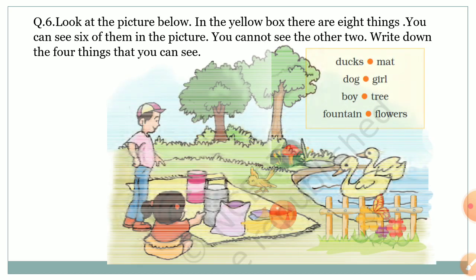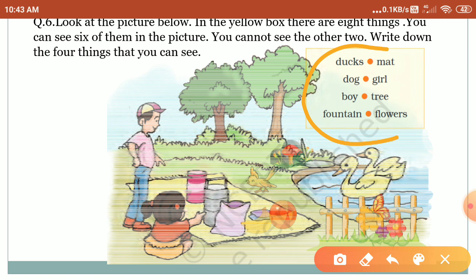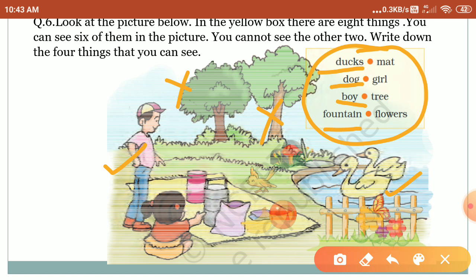Here is the picture and the yellow box. Can you see ducks in this picture? Yes. Can you see a dog in this picture? No. Can you see a boy in this picture? Yes. Can you see a fountain in the picture? No — fountain means 'fawara.' Next is mat. Can you see a mat in the picture? Yes, this is the mat. Can you see a girl in this picture? Yes.